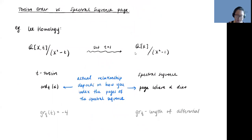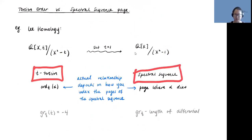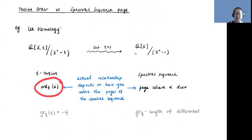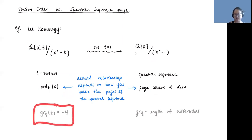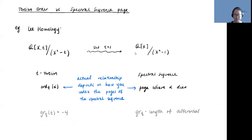We've been talking about torsion order for Alishahi and Alishahi-Dowlin's papers; for us, we think about spectral sequences instead—evaluating at t=1. t-torsion here corresponds to the spectral sequence killing off the torsion, and the order of the t-torsion—how many t's it takes to kill α—corresponds to the page where that torsion element dies. The quantum grading of t on this side is −4, which tells us the length of differentials on a given page of the spectral sequence in terms of quantum grading, and that's how we get the analogous bounds.